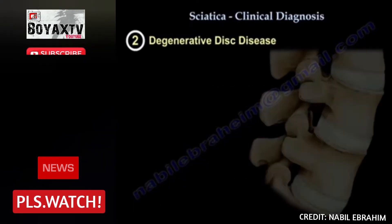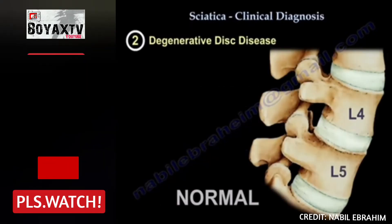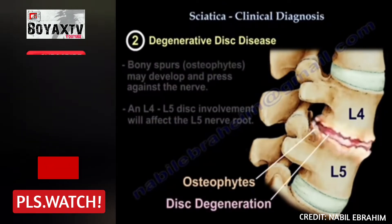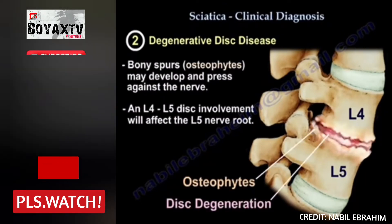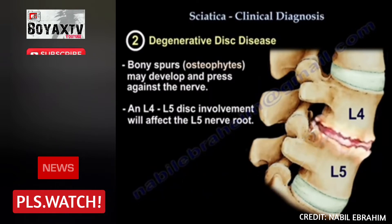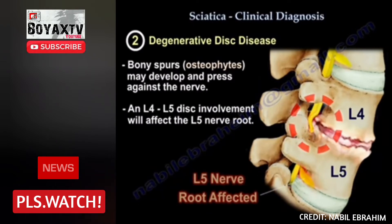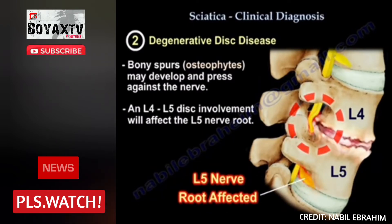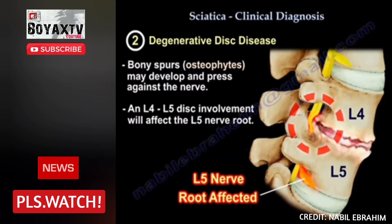The second cause is degenerative disc disease. In this condition, bone spurs may develop and press against the nerve. If the disc involved is at L4-L5, there will be L5 nerve root involvement.